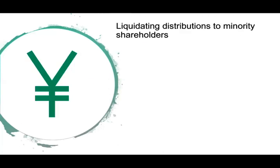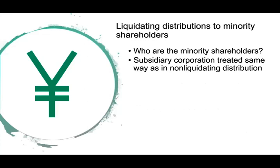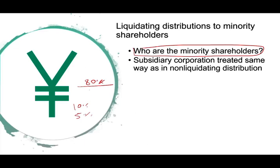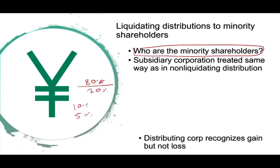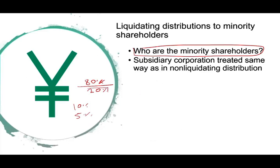First, we want to know who the minority shareholders are. When we own a company, if you own 5% or 10%, you are considered a minority shareholder. The cutoff is 80%. If the majority shareholder owns 80%, the remaining 20% belongs to the minority shareholders. These are the people who don't really have a say in the company — that's what we call the minority shareholders.